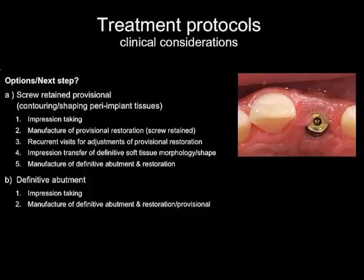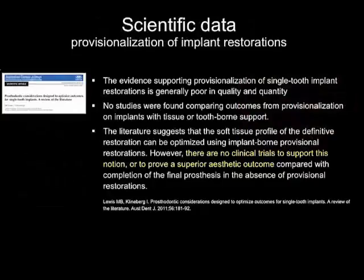However, this approach is associated with a significant increase in treatment time in regards to visits to the dental office for the patient, and at the same time certainly increases the cost just through the manufacture of the provisional. A different approach would be to manufacture the definitive abutment immediately after impression taking without contouring the tissues. The question is, of course, what can we use when?